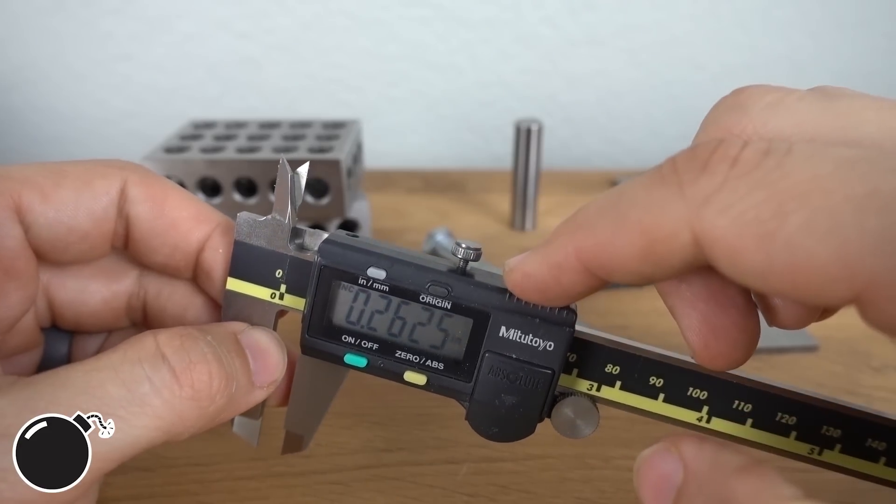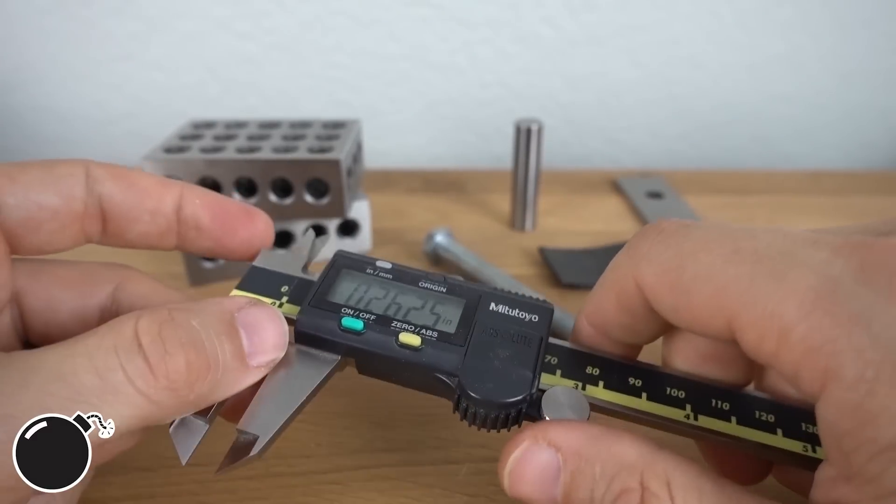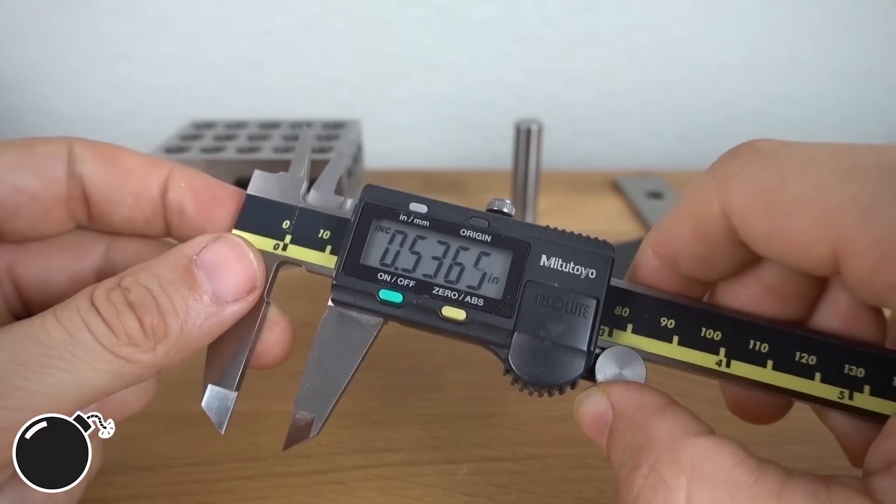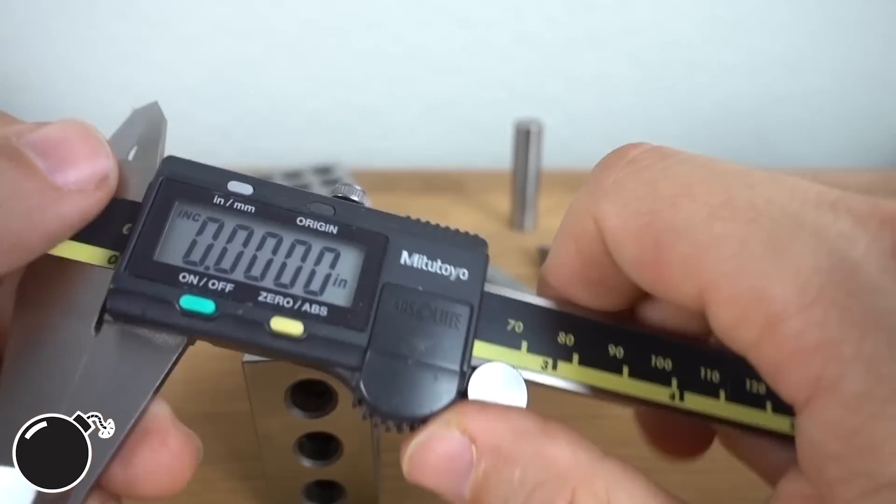The locking knob on top lets you lock the jaws in place. You can use this if you can't read the screen while you take the measurement, or if I'm honest, I'll use it sometimes so I don't forget a measurement crossing the room. Now that you know what the buttons do, how do you actually use calipers?